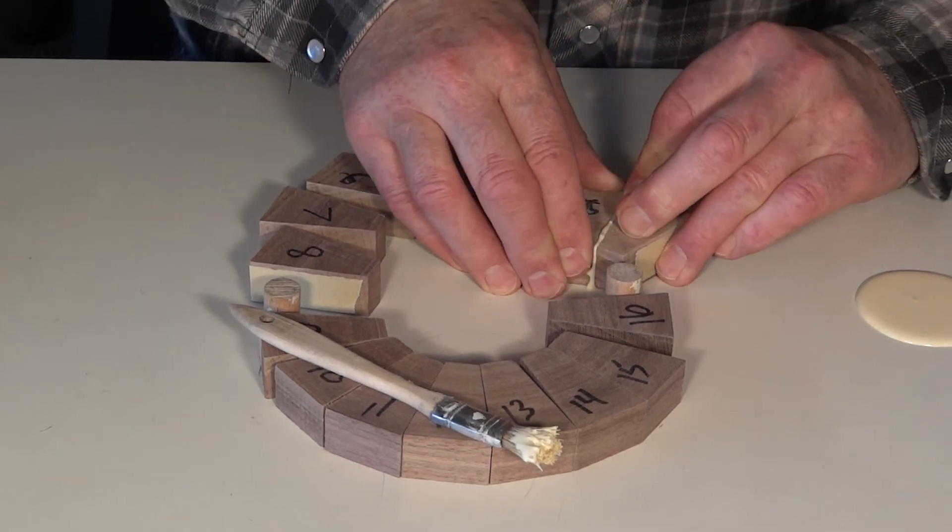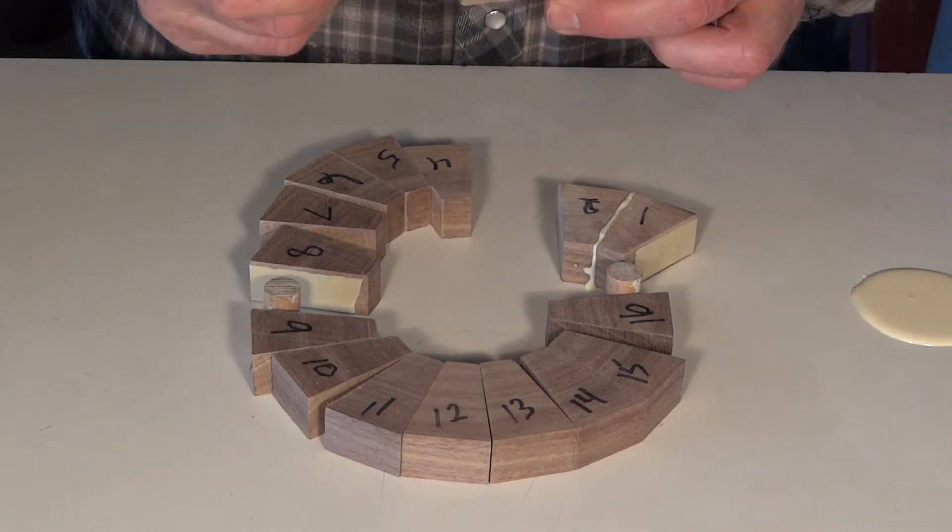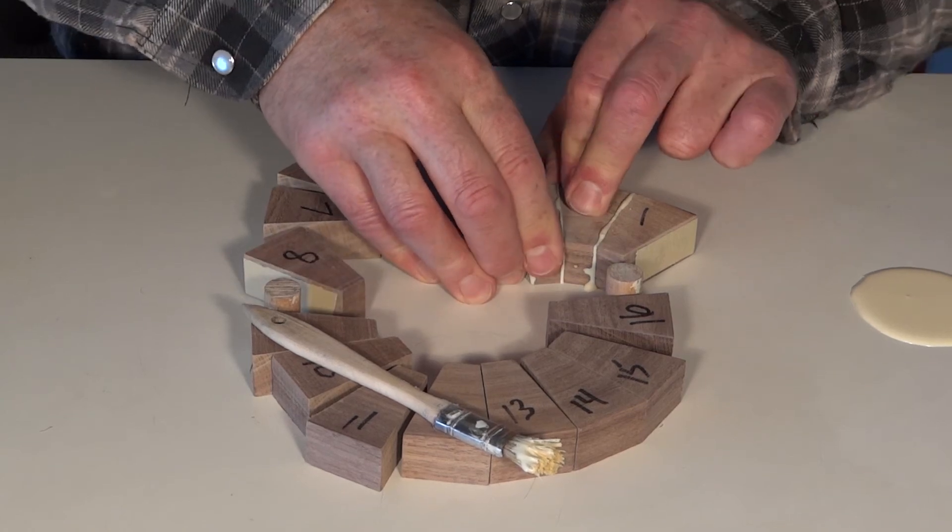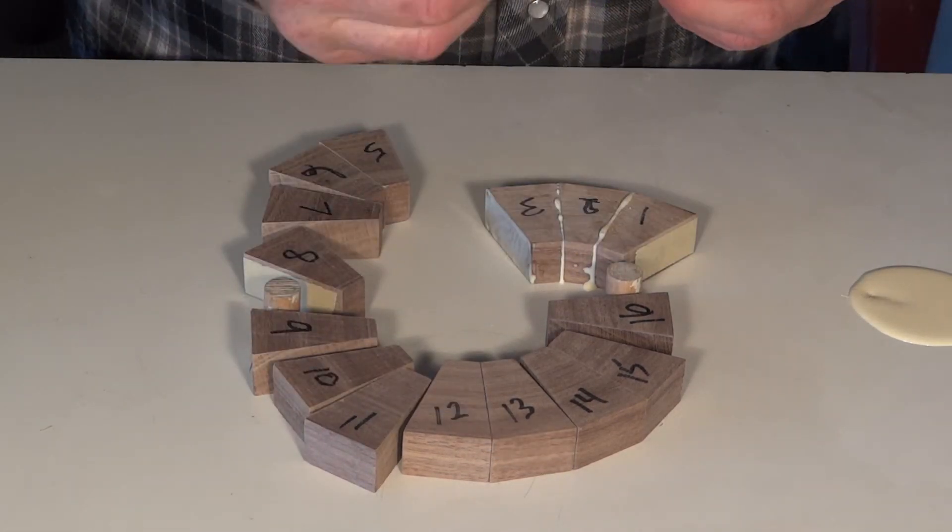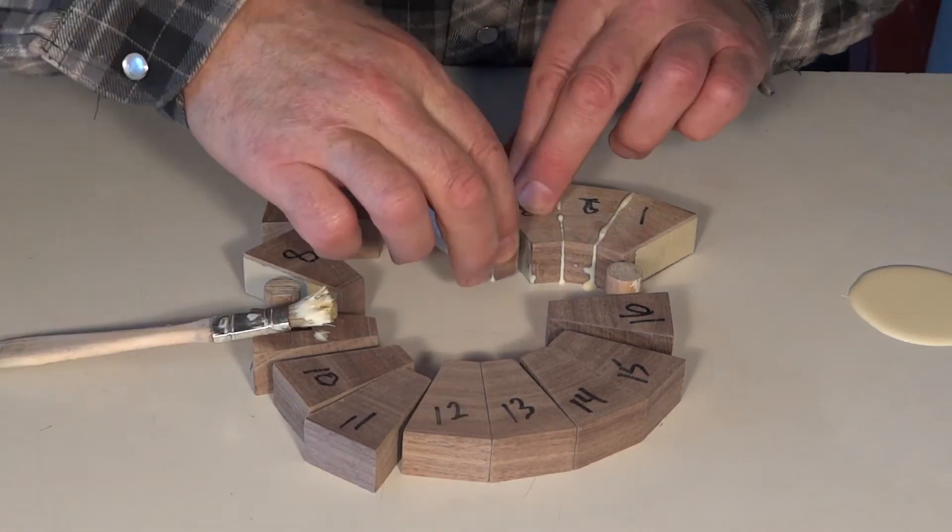I use the rub joint method. I rub the glued surfaces together to be sure the glue is well spread, and then hold them together for a few seconds. That's all it takes to get the glue to start to hold.